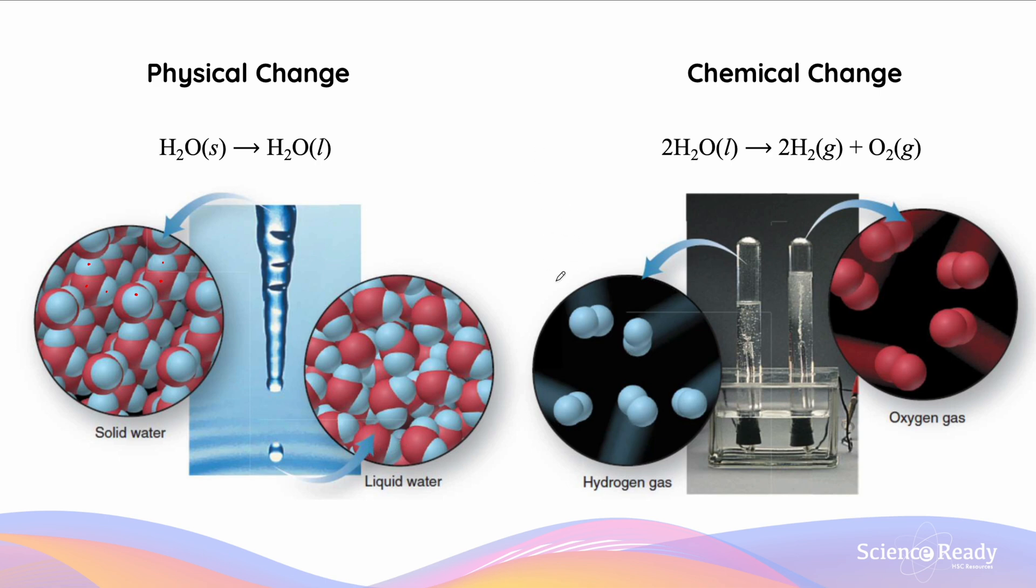However, in our electrolysis reaction, what we notice is that the bonds between the oxygen and the hydrogen themselves are being severed to turn into oxygen gas and hydrogen gas. So on the left, this is an example of a physical change, whereas on the right, this is an example of a chemical change.